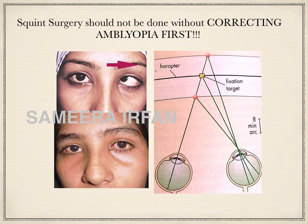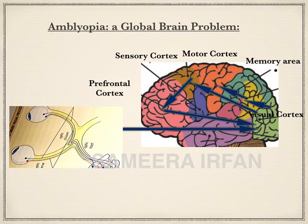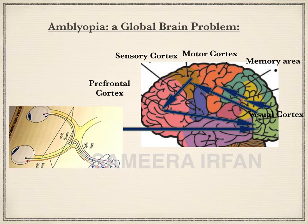The extra-ocular muscles maintain the primary gaze position and allow the eyes to follow moving objects by smooth pursuit movements, and accomplish rapid changes in fixation by fast eye movements called saccades. This is accomplished by intricate neural and physical connections between the visual system, the sensory and motor cortex. All connections from the amblyopic eye are suppressed while those from the good eye are facilitated. Ultimately the good eye becomes dominant and the brain perceives it has only one eye, while the amblyopic eye is totally ignored.